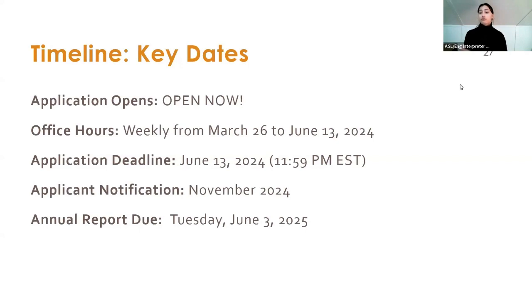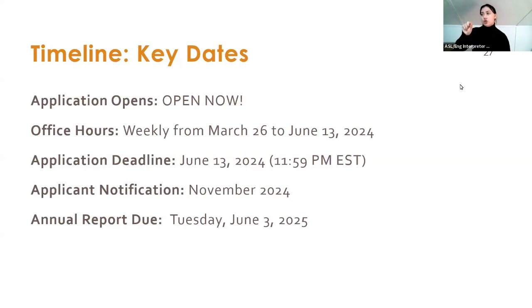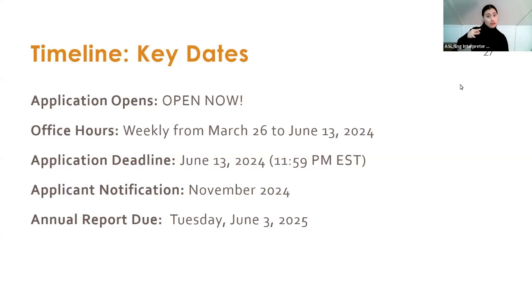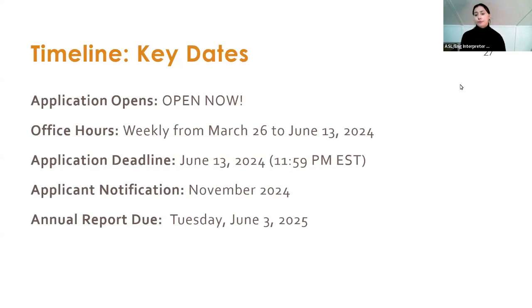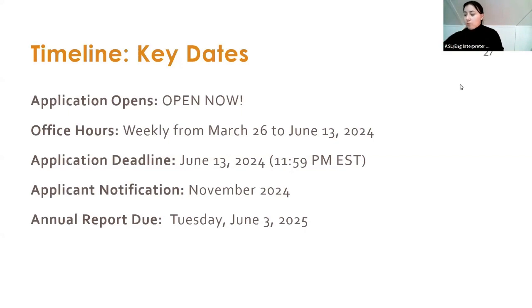Q&A on timeline: notifications and announcements will be made in November 2024. Organizations will be notified of eligibility outcomes — including if ineligible — at that November notification. The grant term is fiscal year 25 for the state, which runs July 1st through June 30th.